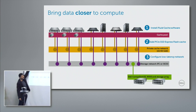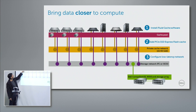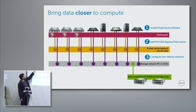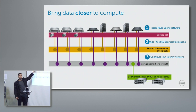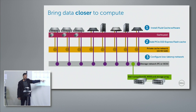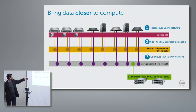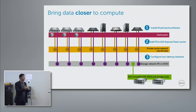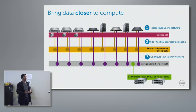The write flow works like this: an application writes data; before Fluid Cache acknowledges that write, it makes a replica copy on a second server. Then Fluid Cache sends the acknowledgment to the application. Writes are super fast because they land in cache. In the background, data is flushed over the SAN network to SAN storage. Once the data reaches SAN storage, the replica is deleted. We're not mirroring — we're managing one copy of write data temporarily, then removing it.